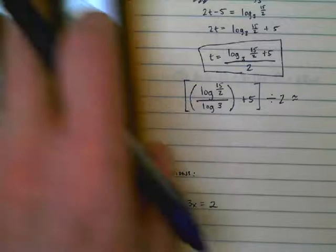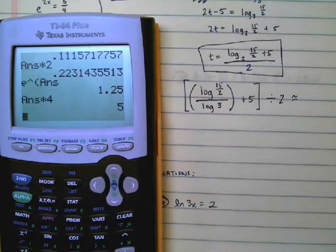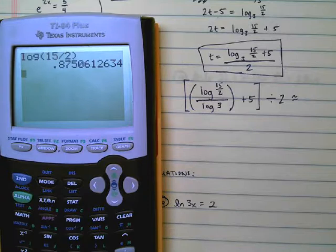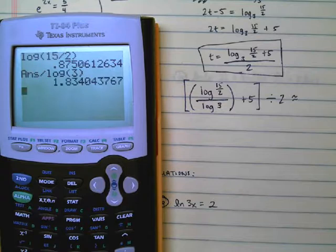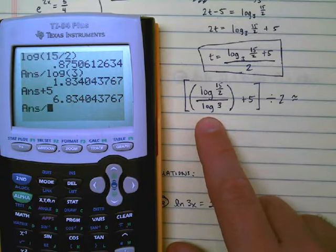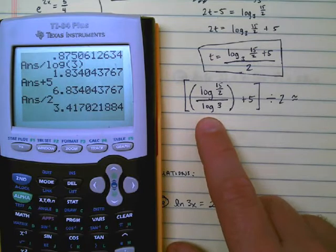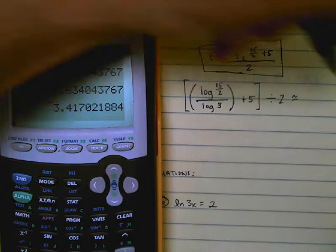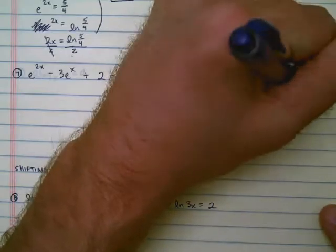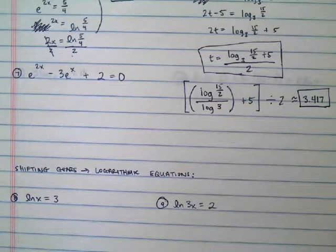That's how I'm going to enter my calculator. Log of 15/2 divided by log of 3. There's the fraction that I needed. I'm going to add 5, divide by 2. And the answer is about 3.417. That's a tough problem.